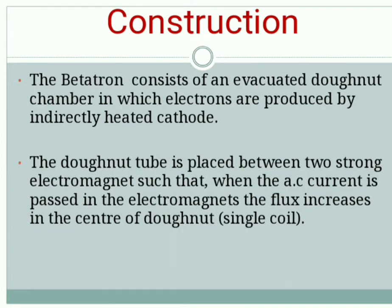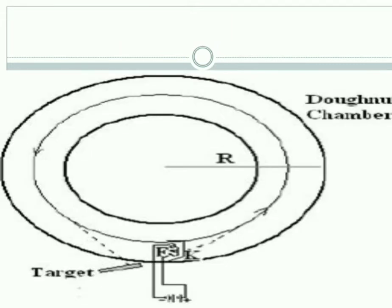In this slide, we are going to see the construction of Betatron. The Betatron consists of an evacuated doughnut chamber in which electrons are produced by an indirectly heated cathode. The doughnut is placed between two strong electromagnets. This is the picture of the doughnut chamber. In this picture, F is the filament source which produces electrons and K is the cathode, whereas R is the radius of the circular path.